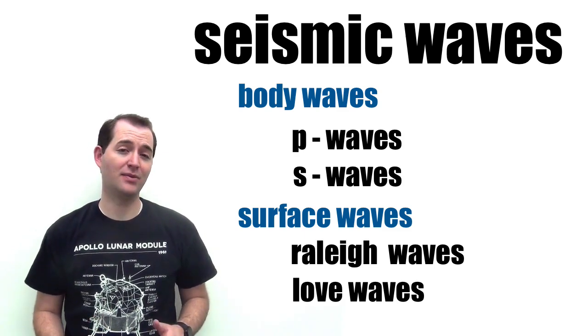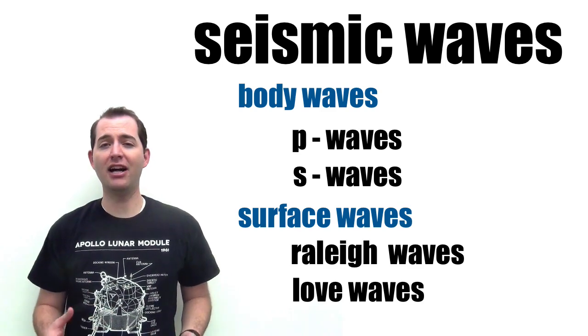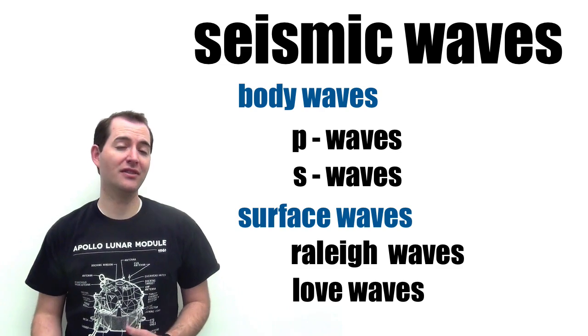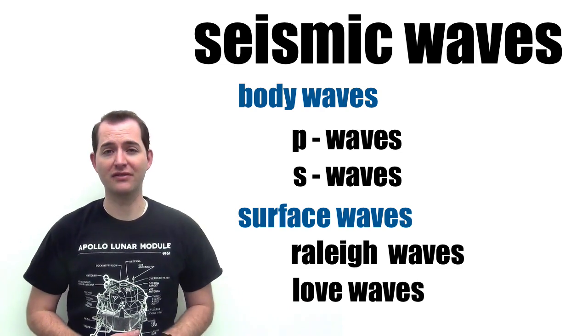Body waves, or P and S waves, are classified as a body wave because they travel through the body of the Earth, whereas surface waves travel just through the surface.